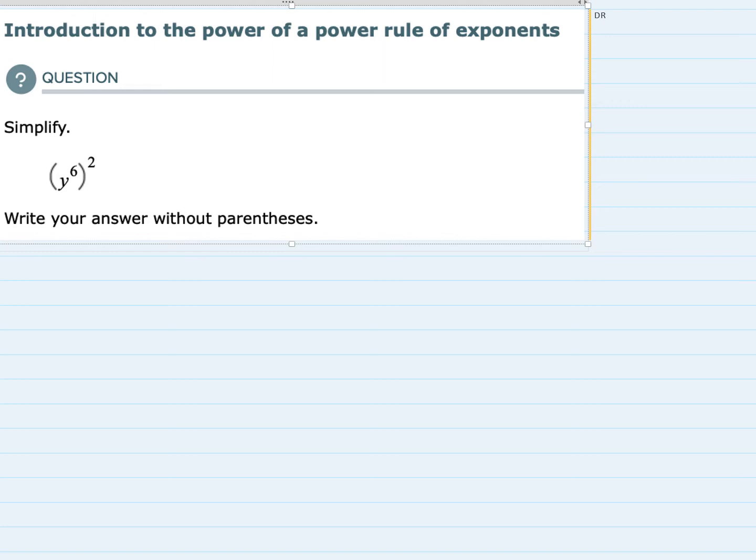First I'm just going to apply the rule. The rule is that whenever you have a variable with a power that is then raised to a power, you would end up with that variable y, and to find the power we would multiply the exponent inside the parentheses with the exponent outside of the parentheses.